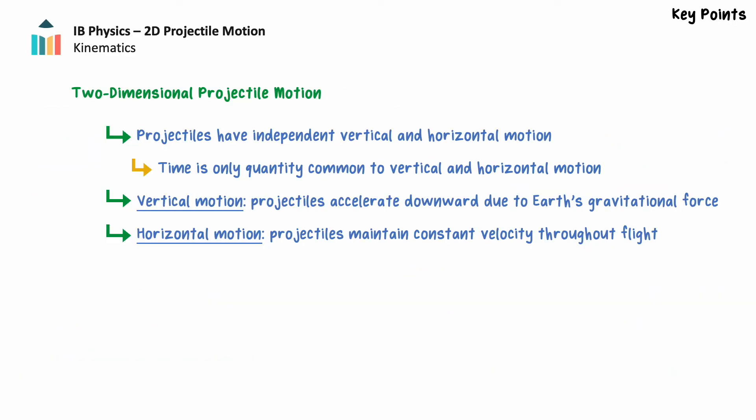This wraps up our introduction to projectile motion in two dimensions. In two dimensions, projectiles have independent vertical and horizontal motion. Time is the only quantity common to both directions of motion. Vertically, the projectile accelerates downward due to the Earth's gravitational force, and we can use formulas for uniform acceleration to solve these problems. Horizontally, the projectile maintains a constant velocity throughout its flight, and we use a formula for uniform motion to solve problems involving horizontal motion.